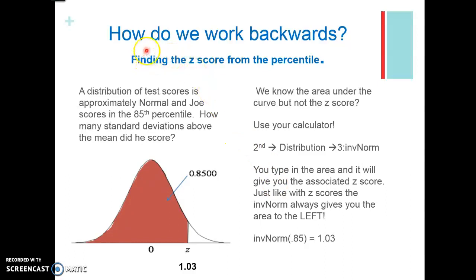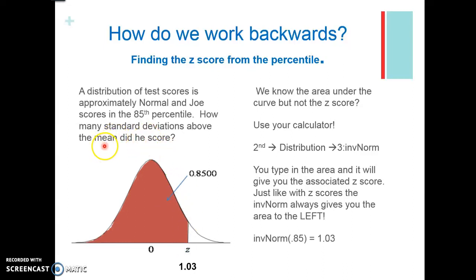Now we're going to be working backwards. If we're given the percentile — given the area under the curve — how can we work backwards to find the Z score? For example: a distribution of test scores is approximately normal and Joe scores at the 85th percentile. The 85th percentile means that 85% is below her score. We want to know how many standard deviations above the mean she scored. Basically, we know the area under the curve but we don't know the Z score. Think about this as doing the opposite — before we had the Z score and found the area; now we're doing the inverse.